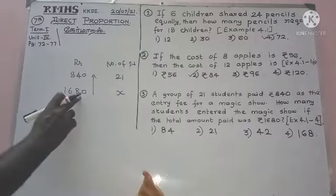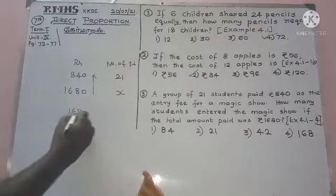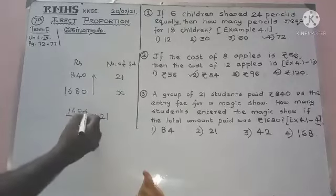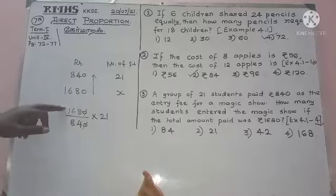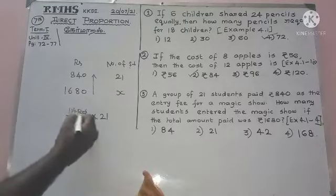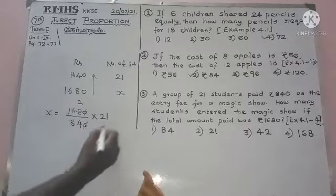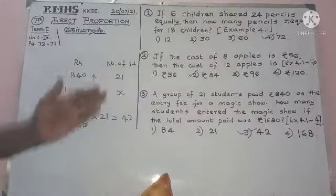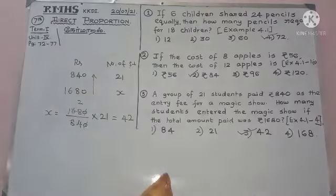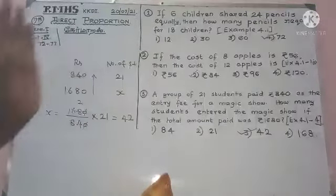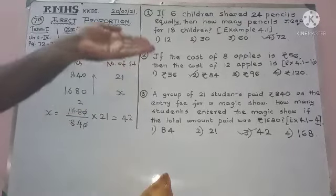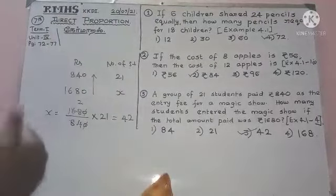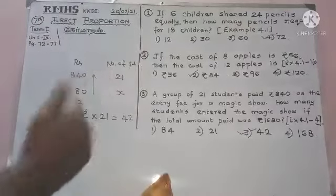Now let's solve: 1,680 divided by 840, multiplied by 21. Cancel the zeros: 168 divided by 84 gives 2. So X equals 2 multiplied by 21, which is 42. So 42 is the right answer. Note that 840 doubled is 1,680, so double the amount means double the students — 21 students doubled gives 42 students.